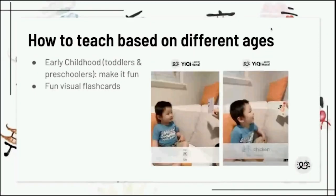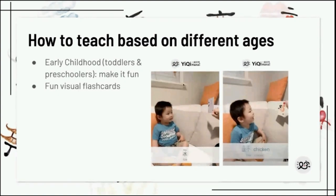The last topic is how to teach based on different ages. For toddlers and preschoolers: most of them are visual learners who look for something fun, interesting, and colorful, so visual flashcards really play a role. For example, my friend's kid is holding the characters and kids that age are really drawn by the visuals of the characters.